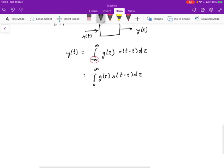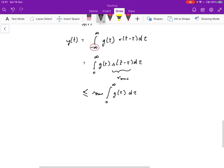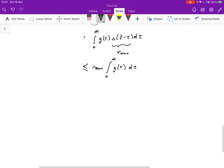Now, we know this is a bounded input, so this value is always going to be less than some value, say r max. So we can pull that out. And so y of t at any point is upper bounded by r max integral zero to infinity, g tau, d tau. And this in turn depends on how this value, g tau, behaves over time.